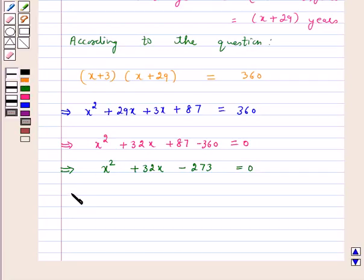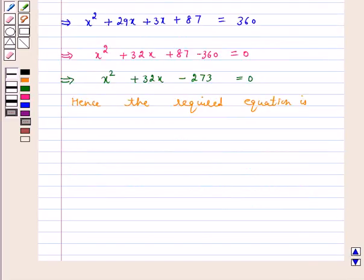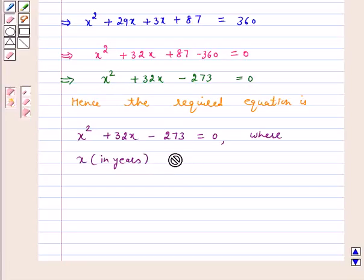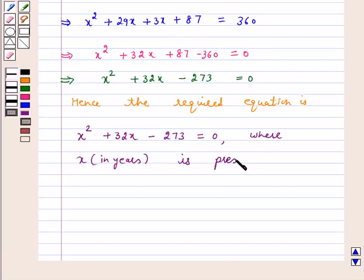Hence, the required equation is X squared plus 32X minus 273 equals 0, where X in years is the present age of Rohan.